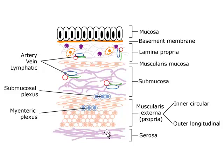The last external layer of the gut is called either the adventitia or serosa. It is called the adventitia where the external layer is made purely of connective tissue, which is seen in those parts of the gut that are retroperitoneal. It is called the serosa where this connective tissue is covered by a thin squamous layer of mesothelial cells, characteristic of those parts of the gut which are peritonealized.